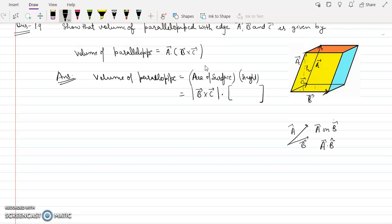I have to find the vector in this perpendicular direction. So what is this unit vector? This unit vector will be B cross C upon B cross C.